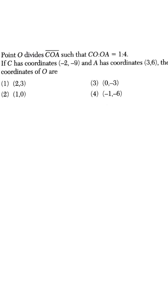We have a line segment and we're told that a point divides this line segment into a one to four ratio. We're given the coordinates of points C and A, and we want to find the coordinates of that point. The first thing we need to be mindful of is just this one to four ratio.